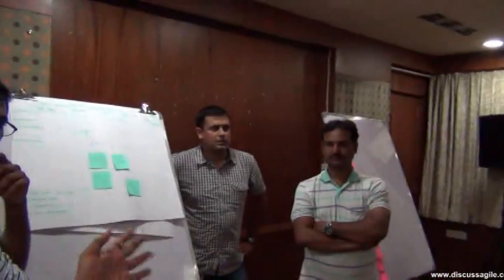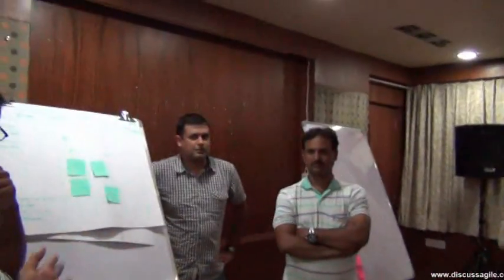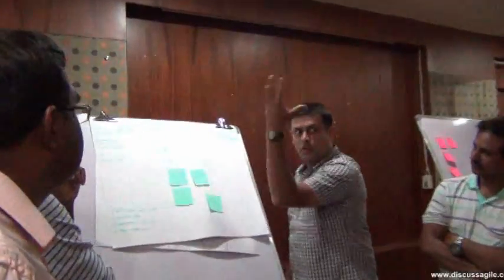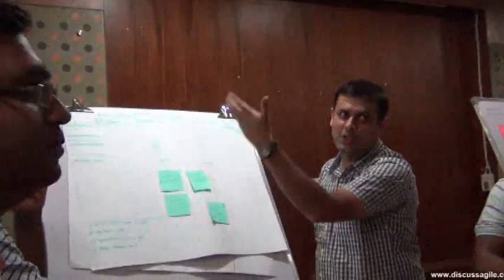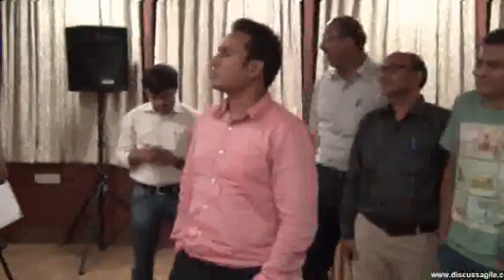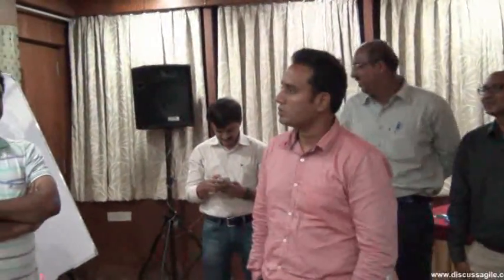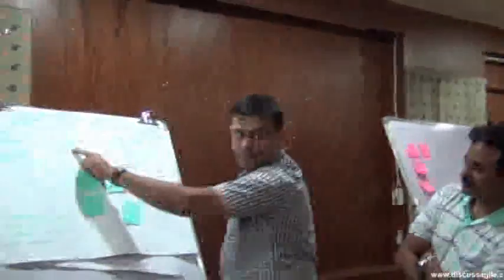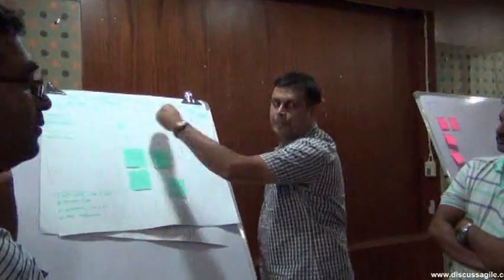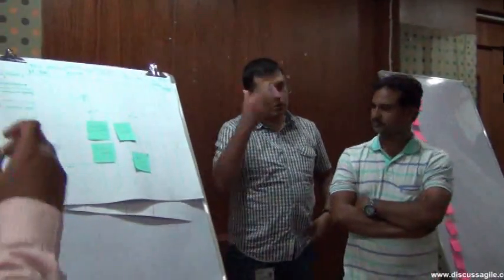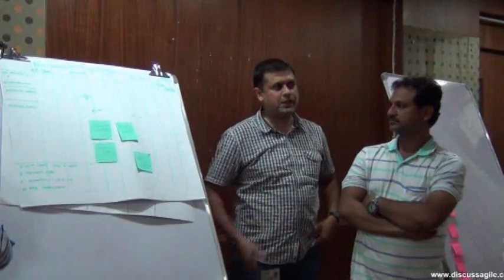It's the same board because the team is small and the same team works on everything. If you have different teams, you might split it. Also, all top-level managers want a single view of what's happening - that's why it's kept as a single board. Priority sorting is done by the business group.